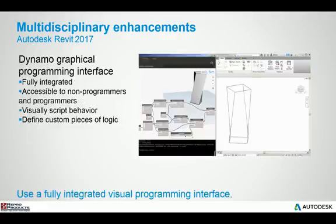Dynamo has been fully integrated into Revit now, and you can find it in the Manage tab of the ribbon, whereas prior it was a separate download and install found in the Add-ins tab. Dynamo gives you the ability to do visual programming and relationship building between your objects built in Revit and the actual Dynamo interface.